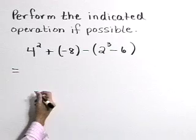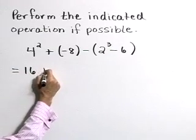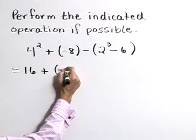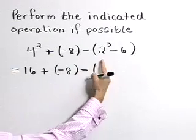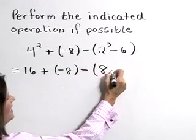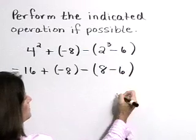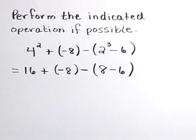4 squared is 16 plus negative 8 minus, in parentheses, 2 cubed is 8 minus 6, and close parentheses.